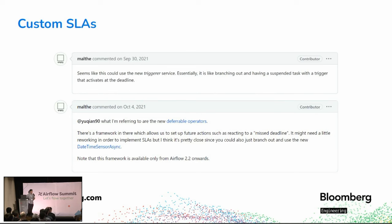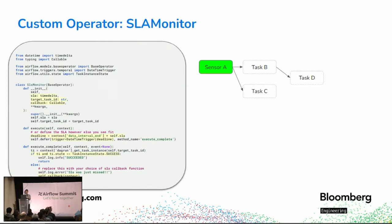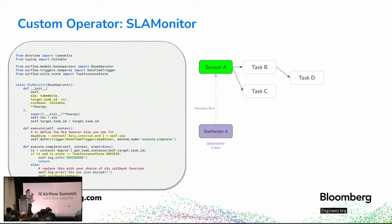So what other options do we have? I credit much of our solution to a community member who suggested using deferral operators that launch datetime triggers. Here's how it works: we have a custom deferral operator called the SLA monitor, which takes the SLA duration, the callback function to execute, and the target task ID to monitor. It spins up at the beginning of the DAG as a standalone deferral operator, quickly pauses itself, and defers — spinning up a datetime trigger that measures, say, one hour from then.